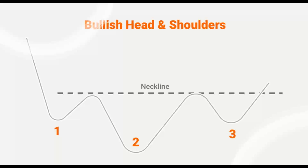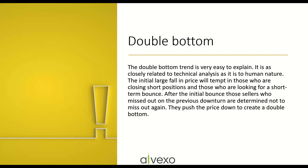We also have bullish head and shoulders. A bullish head and shoulder is when price is moving down, we see the formation of head and shoulders, and that's telling us a reversal is in place and we're going to get an uptrend. It's never smooth and easy — we get one shoulder forming, we get the head. The important thing is the neckline. We get the formation of the right shoulder, which is equal to the left shoulder. Then we get the break of that neckline, and that tells us price has now reversed and you could take a long trade.